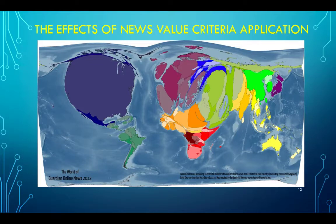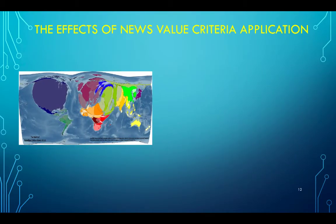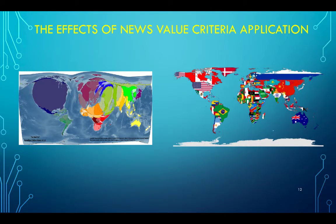This is a map of the world according to the coverage of the Guardian online news in 2012. You can clearly see that the amount of coverage that countries like the United States attract is bigger than their geographic size, while countries much larger geographically attract smaller coverage. The criterion for news value in this case is not population or geographic size, but importance and influence in the world according to the editors of the Guardian online.